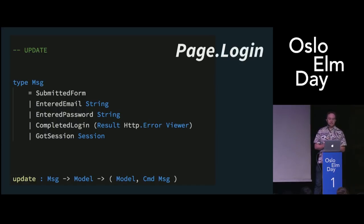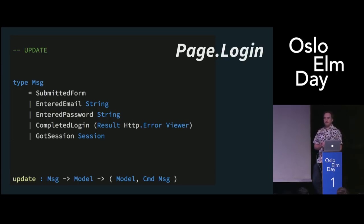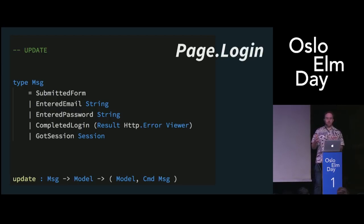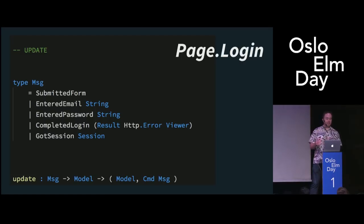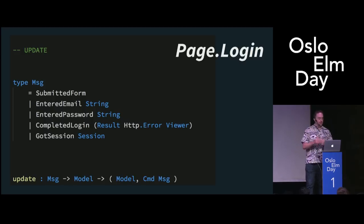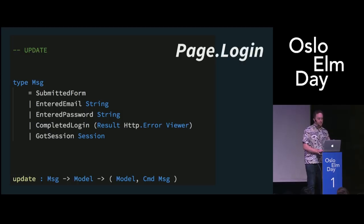One thing to note: something I've gotten into that I hadn't done with the previous version of the SPA example is past-tense message names. I really like the way these read, especially in the debugger. It's basically trying to answer the question 'what happened?' As opposed to an imperative form. So instead of saying 'set email', 'set password', I change it to 'entered email'. Like, what happened? Oh, the user entered the email. The user entered the password. They completed the login. We got the session back from the server.